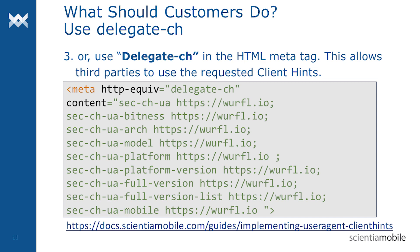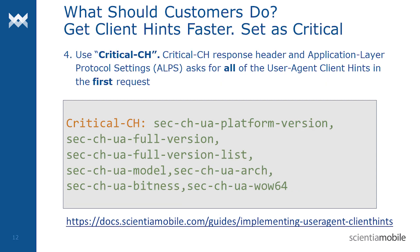Third, if you don't have access to edit your server's request header, use DelegateCH in the HTML meta tag. This allows third parties to use the requested client hints. In this example, the user is granting access to Warfel.io. Fourth, get your client hints faster using the CriticalCH header. The CriticalCH response header will request all of the user agent client hints in the first request — no need for a second trip.